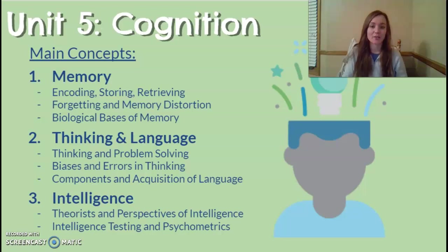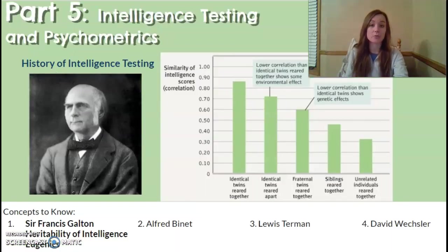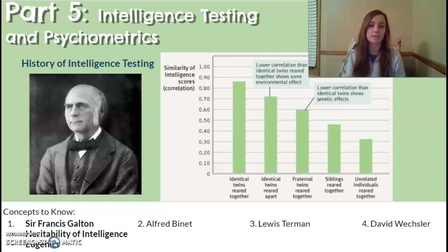Hi everyone, this is the last part of the cognition unit. It will focus on the final part of intelligence, which is intelligence testing and psychometrics. In this video, we will start with the history of testing for intelligence and the people who influenced it.